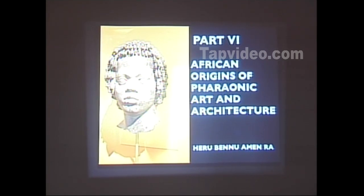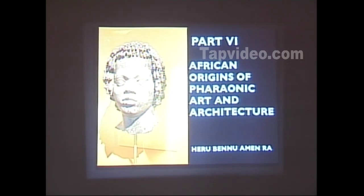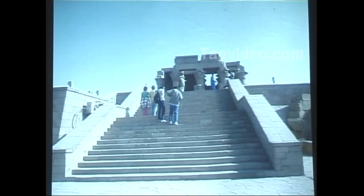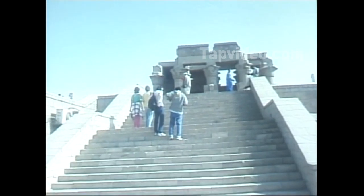Okay, part six: African origins of pharaonic art and architecture. We're moving right along. We're at the Temple of Kom Ombo. You remember I talked before about the temples being up on a hill. Visitors would come to visit the temple — it's a double temple, the temple of Heru and Sebek. Horus is the Greek pronunciation.